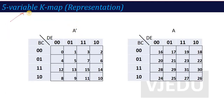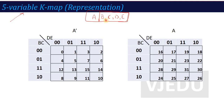For the 5-variable K-map, just like I have told you, the first step is representation. The representation will change. Now we have 5 variables: A, B, C, D, and E. If you consider only BCDE, that becomes 4 variables. BC on one side, DE on the other side, with 4 combinations: 00, 01, 11, 10 — giving numbers 0 to 15.